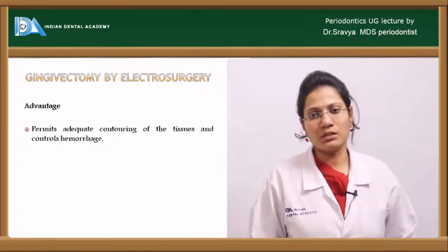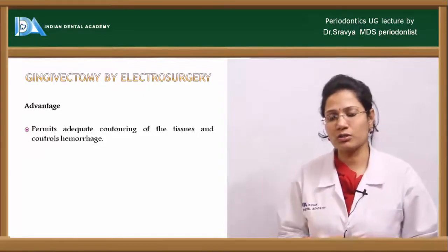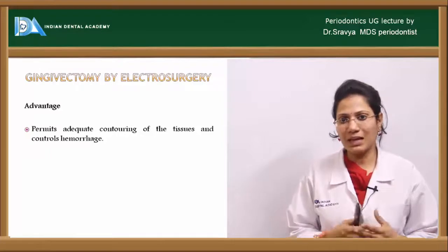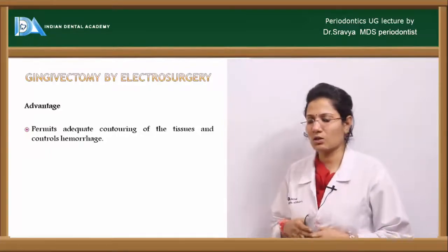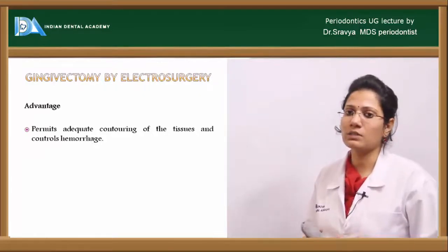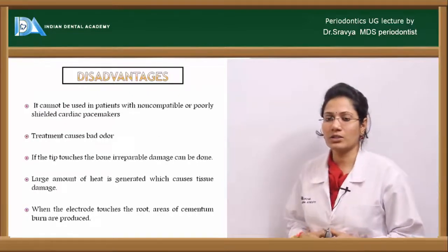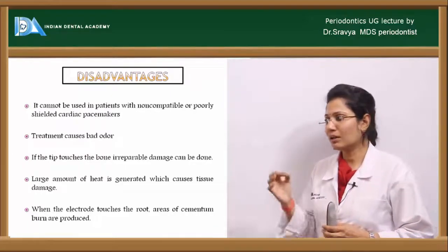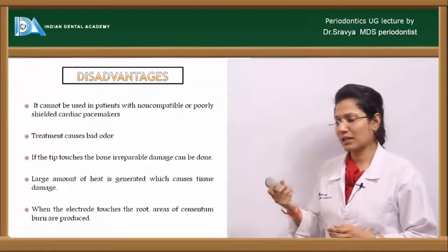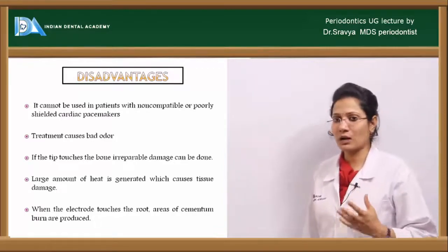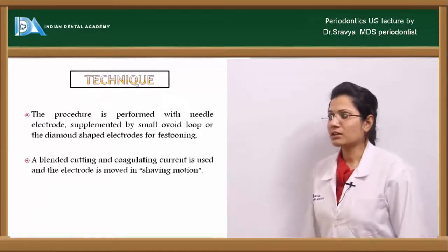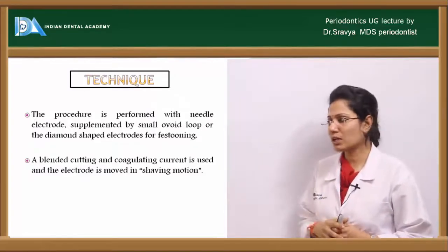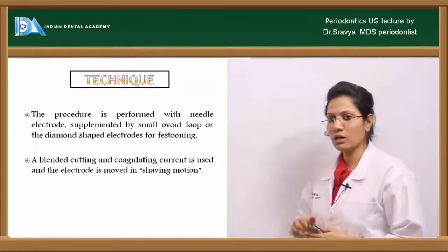Other than using surgical blades, gingivectomy can also be performed using electrosurgical units. The advantages of electrosurgery include adequate contouring of tissues and control of hemorrhage. The disadvantages include bad odor, generation of heat, potential irreparable bone damage if the tip contacts bone, and it cannot be used in patients with cardiac pacemakers. The technique uses a needle electrode supplemented with a small ovoid loop or diamond-shaped electrode for festooning, with a blended cutting and coagulating current applied in a shaving motion.